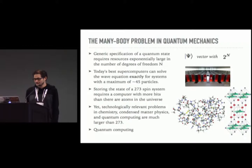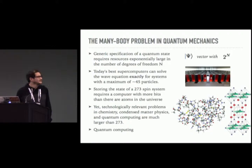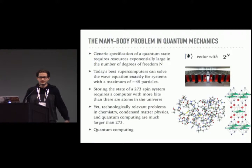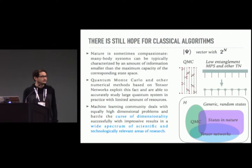It's so bad that storing the state of a 273-spin system requires a computer with more bits than there are atoms in the universe. And yet, very important problems in chemistry, condensed matter, and quantum computing involve systems way larger than 273 spins. Quantum computing may help in the future, but what can we do before we have quantum computers?